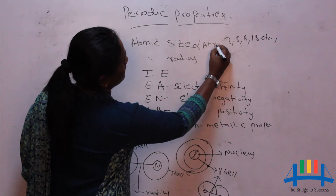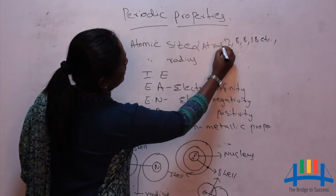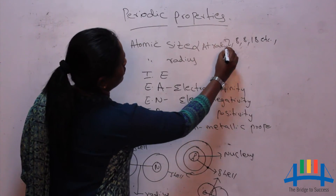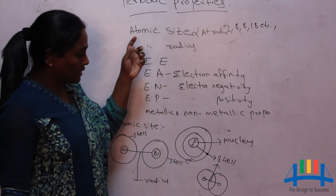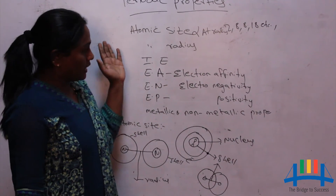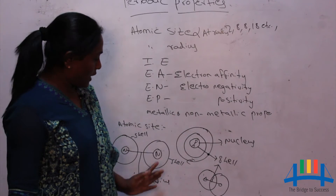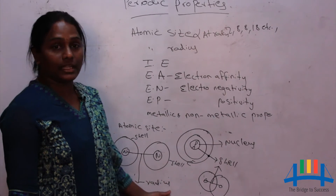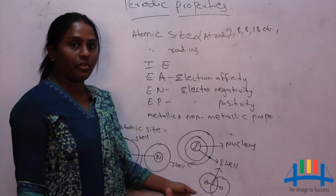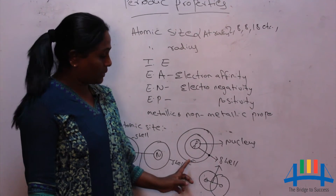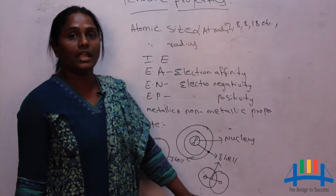In atomic radius there are 3 or 4 types of atomic radius, based on the type of bonding that is present between the elements.